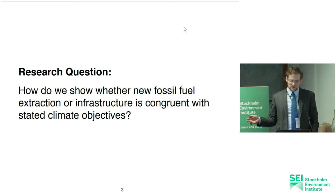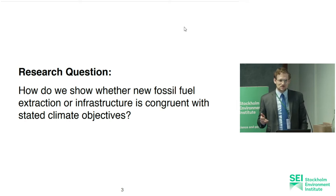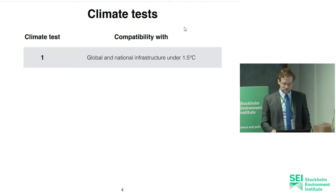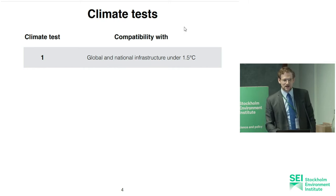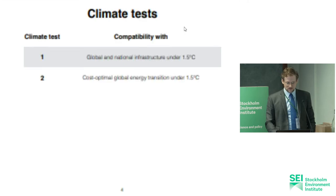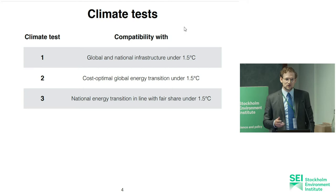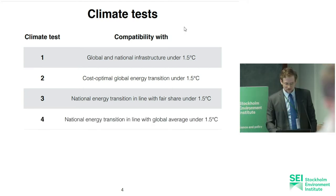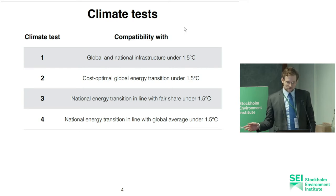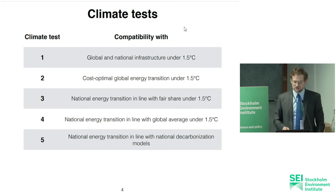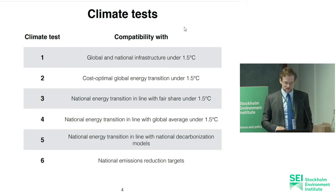I'm doing climate tests, comparing new fossil fuel extraction or related infrastructure with climate objectives, national or global. I have a suite of tests based on existing research but synthesizing it. First: global and national infrastructure committed emissions from existing infrastructure. Then cost optimal energy transitions at a global scale, scaled down to the test subject — Canadian gas extraction. Then national energy transitions that follow a fair share under 1.5 degrees. The fourth is the global average under 1.5. The fifth uses national decarbonization models. And the sixth is for federal emission reduction targets.